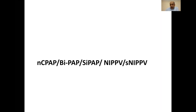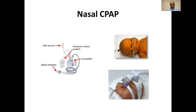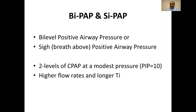Nasal CPAP, BiPAP, PSYPAP, NIPPV, and synchronized NIPPV are all very similar. The common thing in all these modes is a CPAP baseline, with additional positive pressures on top. For nasal CPAP, you need a gas source, a device to deliver pressure, a humidification system, and a nasal interface. For BiPAP or PSYPAP, you need a bespoke device. Both are two levels of CPAP where the pressure is only modest — maximum 7 to 8 centimeters above the peak — and they require higher flow rates and longer inspiratory time compared to NIPPV.